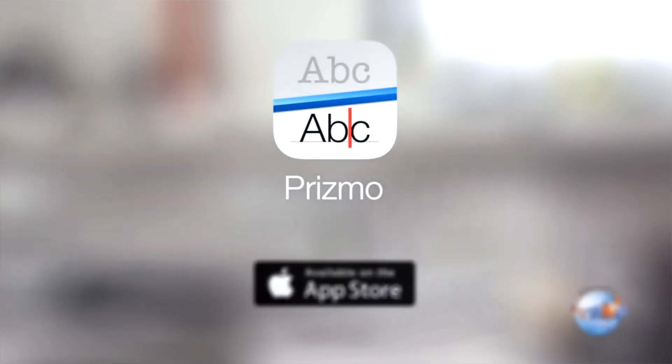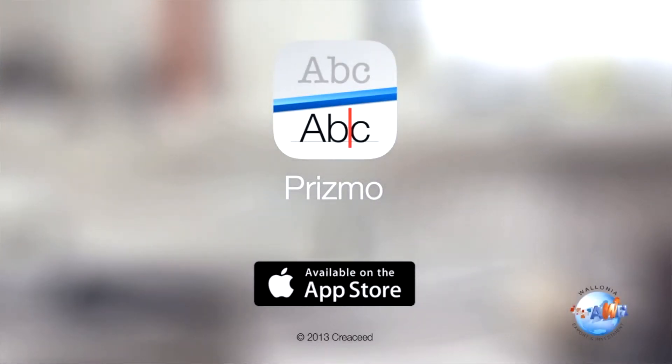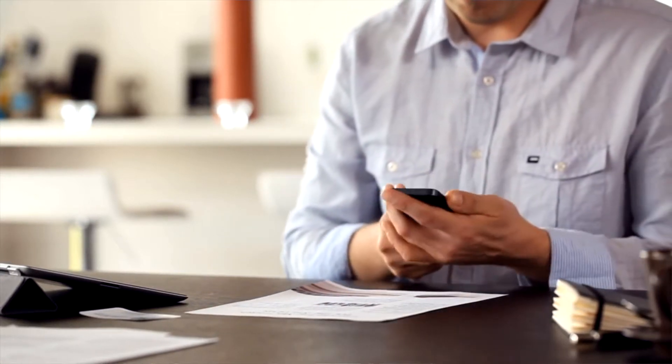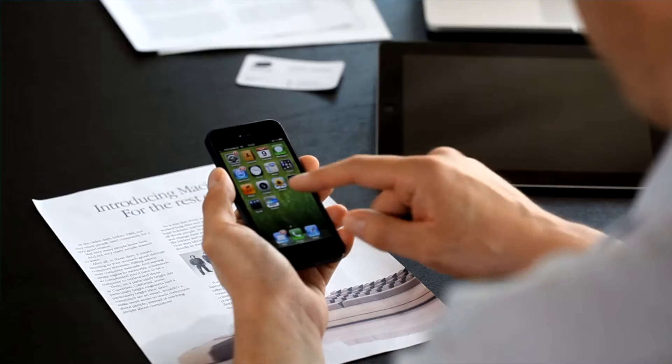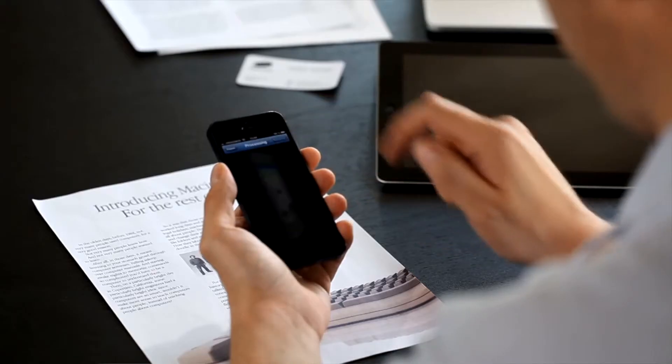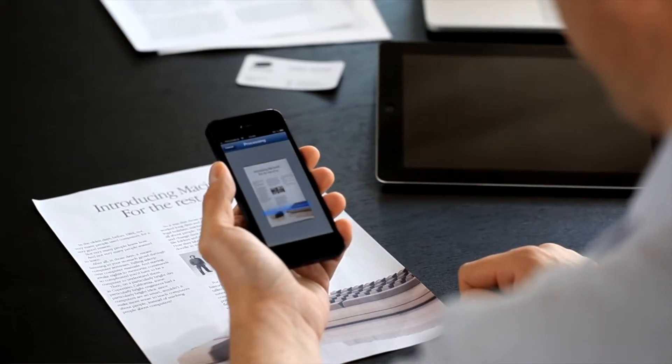This is Prismo, an app available in the iPhone App Store for just about $9.99. It shares a lot of features with Open Book like image capturing, OCR, and text diction. But at less than 1% of the cost of Open Book, can this underdog keep pace?